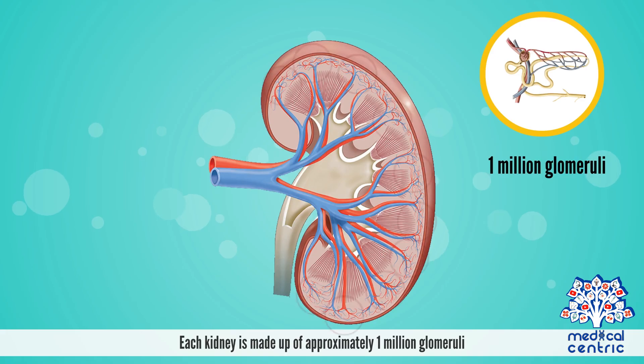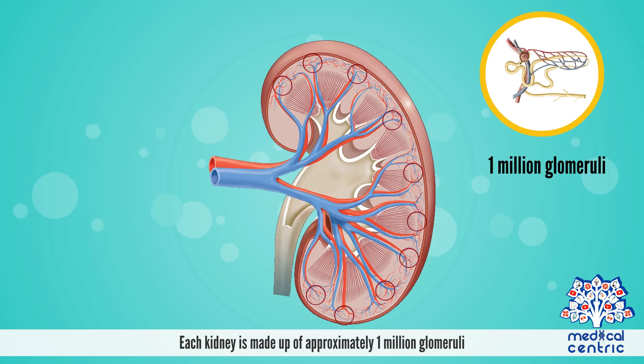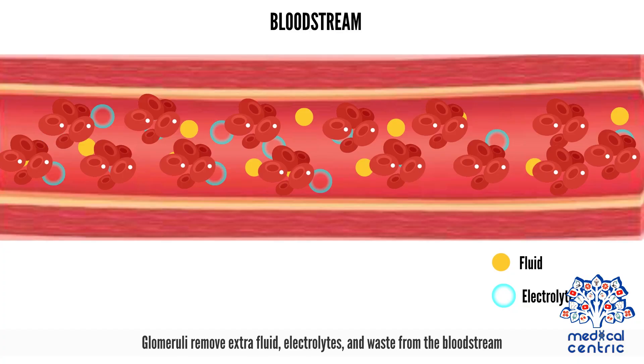Each kidney is made up of approximately 1 million glomeruli. Glomeruli remove extra fluid, electrolytes, and waste from the bloodstream.